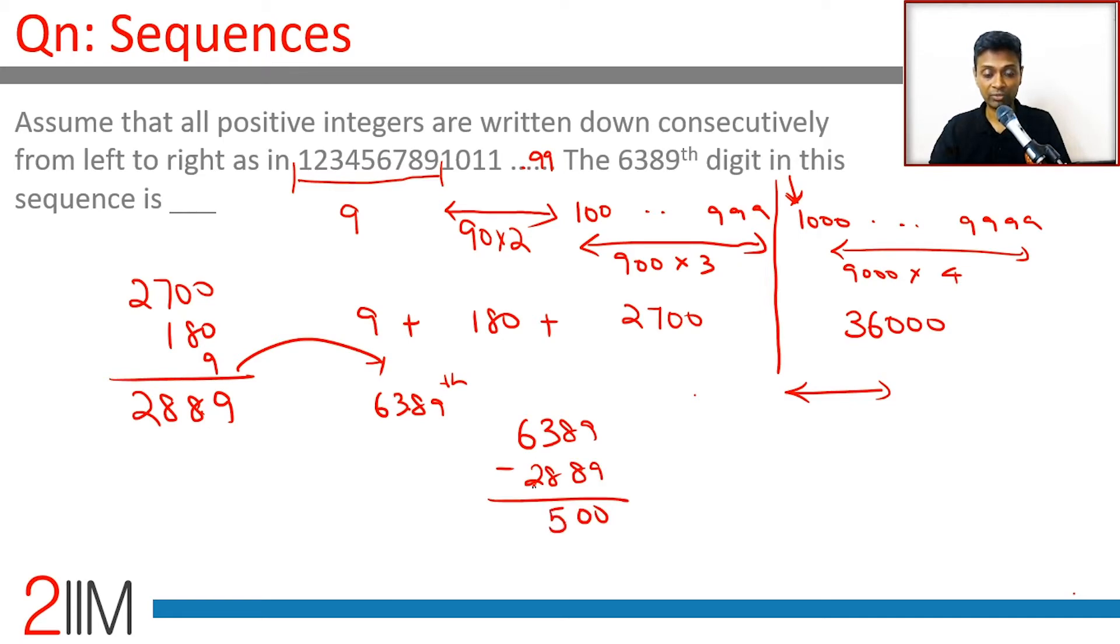13 minus 8 is 5. 5 minus 2 is 3. So the 3500th digit when you are counting from 1000 onwards. That's what we are thinking about.